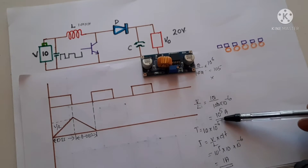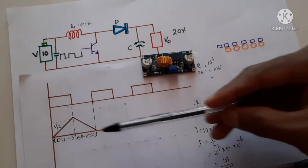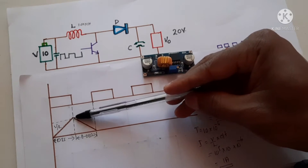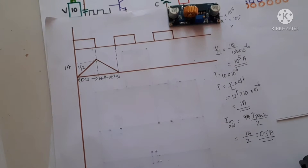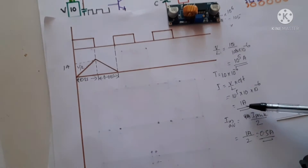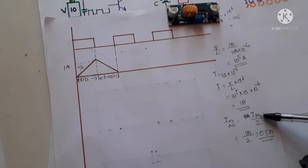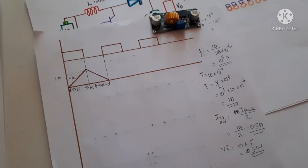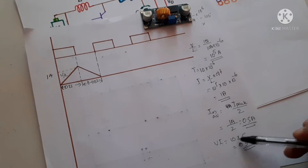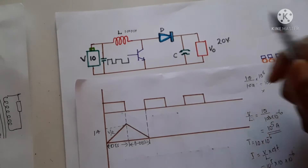So to calculate the current in 10 microseconds, we multiply that value by 10 microseconds, which gives 1 ampere. In 10 microseconds the current will reach 1 ampere — that is the peak value. To get the average value, since this is a triangle, we divide by 2, giving an average current of 0.5 ampere. The input voltage is 10 volts and the average current is 0.5 ampere, so the total power is V × I = 10 × 0.5 = 5 watts stored in this inductor when the transistor is switched off.